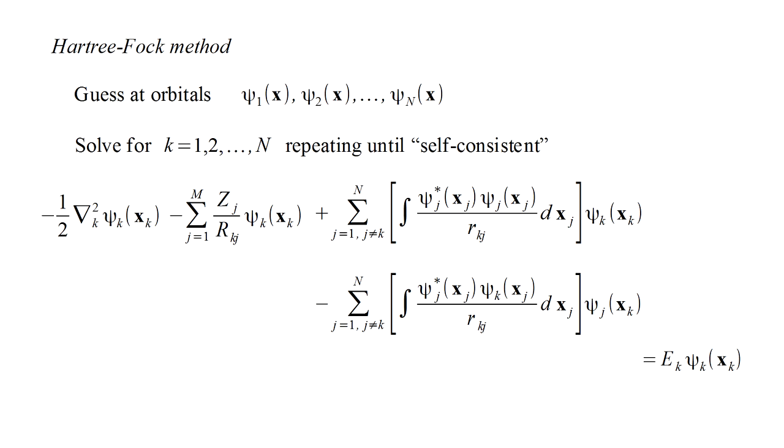e k is the energy that would be required to remove an electron from the kth orbital, assuming the other orbitals do not change, that is, they remain frozen.